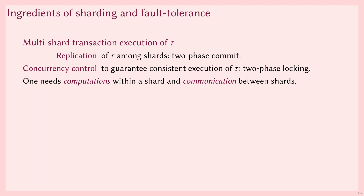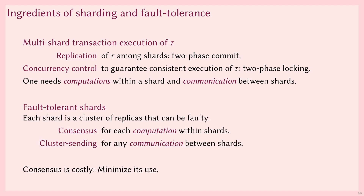To build these methods, we only need local computations at the shards and communication between the shards. If we make shards fault tolerant, then each shard is a cluster of replicas of which some can be faulty. In such an environment, every local computation within a shard needs to be done via consensus, to assure that all replicas in that shard maintain the same state. At the same time, communication between shards can be done with a cluster-sending primitive that can deal with any faulty replicas. Unfortunately, consensus in such a system is notoriously expensive, and even the best implementations are only able to do a few thousand decisions per second. Hence, we want to minimize the use of consensus.